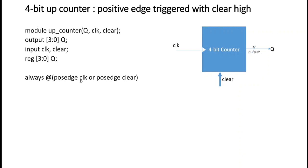We use the always block and pass clock and clear in the sensitivity list, because we are doing positive-edge triggering and clear is an asynchronous signal. If clear is high, we want the output to be set to zero — so all four bits of Q will be set to zero.